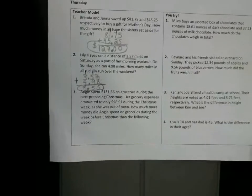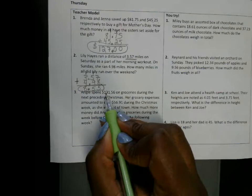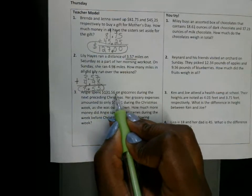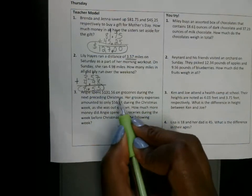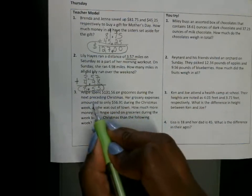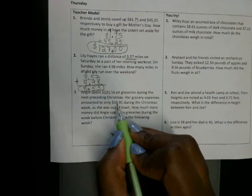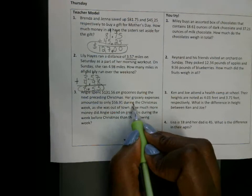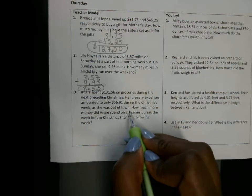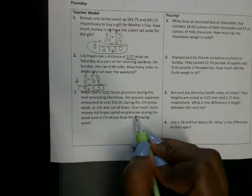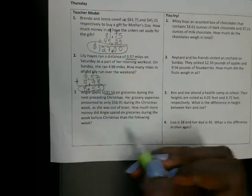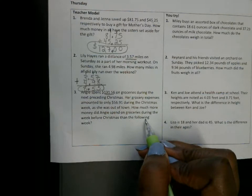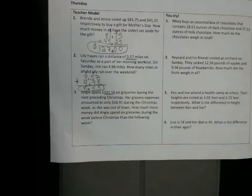Angie spent, I'm going to read the third one. Angie spent one hundred thirty one dollars and fifty six cents on groceries during the next preceding Christmas. Her grocery expenses amounted to only fifty six dollars and ninety one cents during the Christmas week, as she was out of town. How much more money did Angie spend on groceries during the week before Christmas? This week right here, the preceding week, then the following week. So how much more money? So what you have to do is subtract.